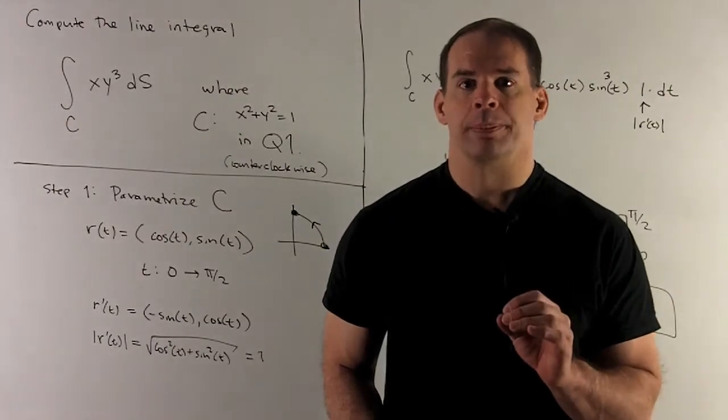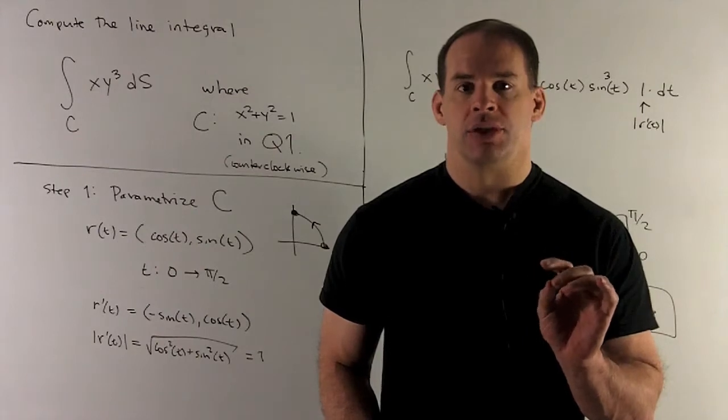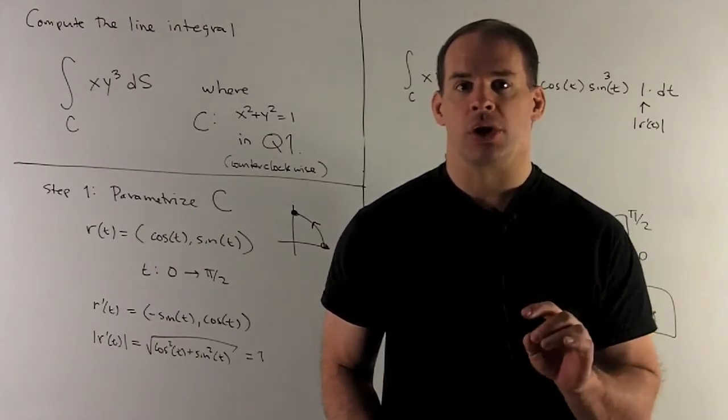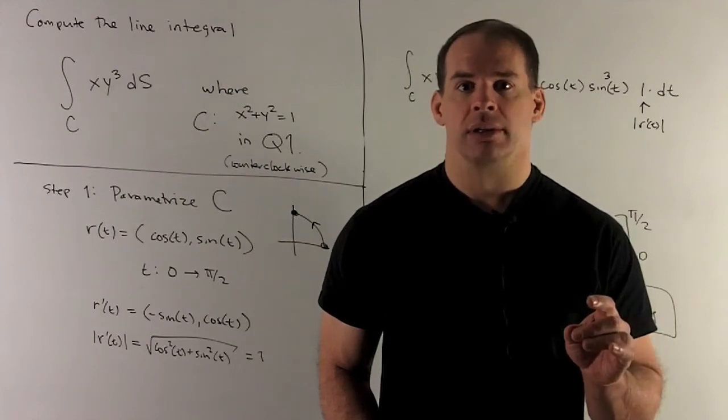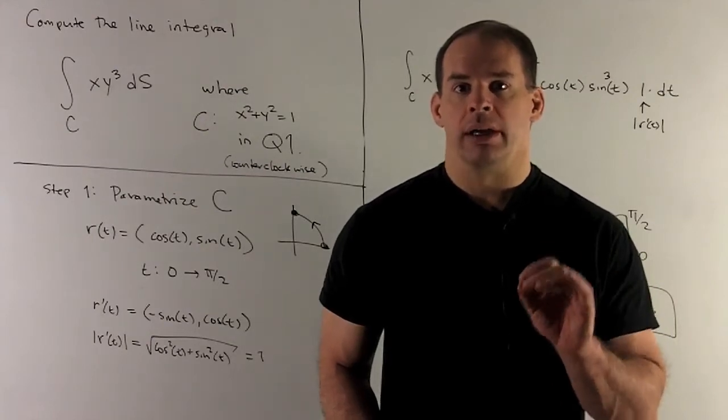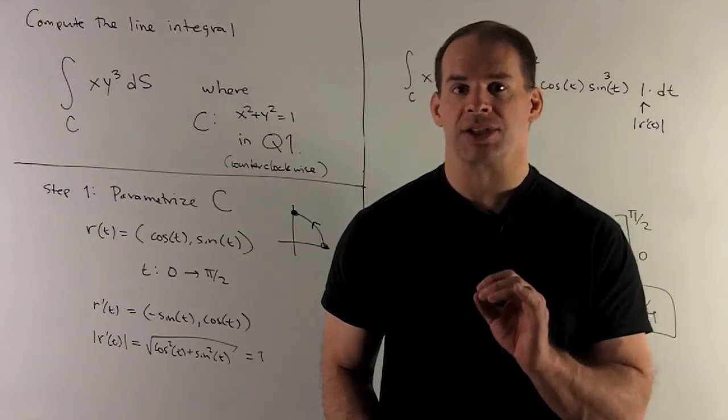Calculate the following line integral. So our curve is going to be C, it's going to be the piece of the unit circle in the first quadrant moving counterclockwise. Then we want integral over C of xy cubed ds.